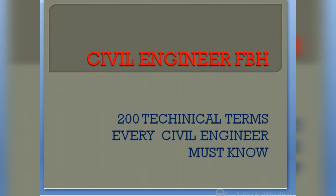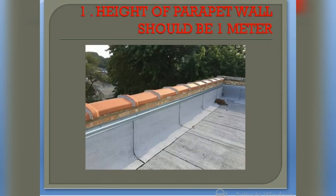Hello civil engineers, welcome back to our channel Civil Engineer FBH. Our today's topic is 200 technical terms which every civil engineer must know. I will make a series of videos in which I will discuss these 200 technical terms. Coming to our first point: the height of parapet wall should be 1 meter.